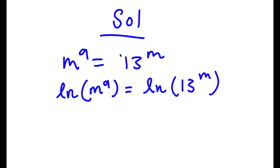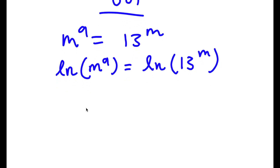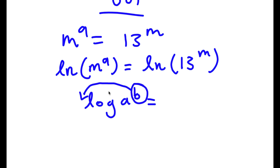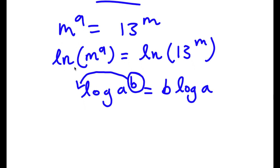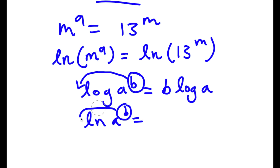An important property of logarithms is that if I have log a to the power of b, I can move this exponent b to the front of the logarithm, so this equals b times log a. This property is known as the power property. And because ln, the natural log, is also a logarithm, if I have ln of a to the power of b, this is equal to b times ln a.